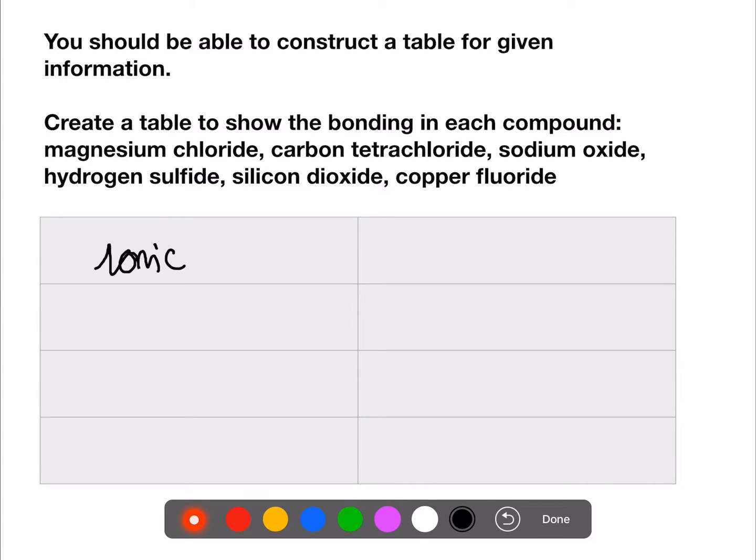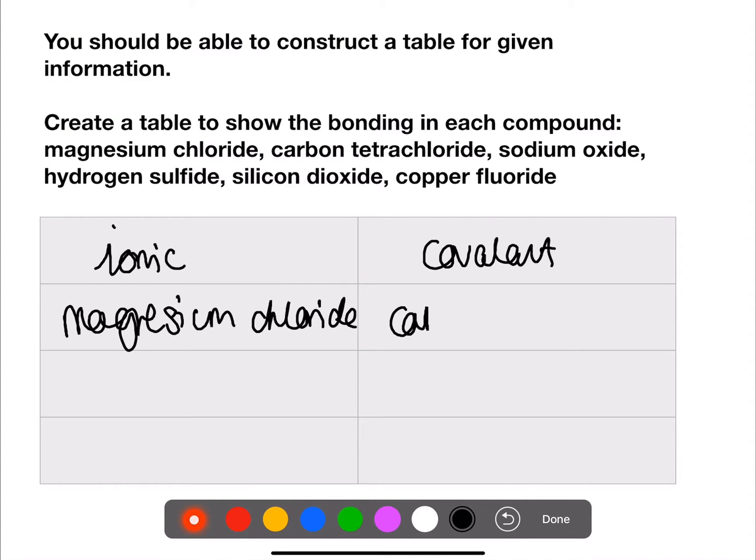We can then put the different compounds into the table. Magnesium chloride and sodium oxide are ionic compounds, whereas carbon tetrachloride is covalent.